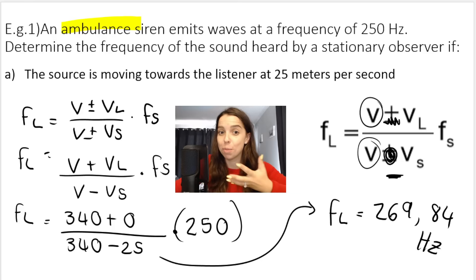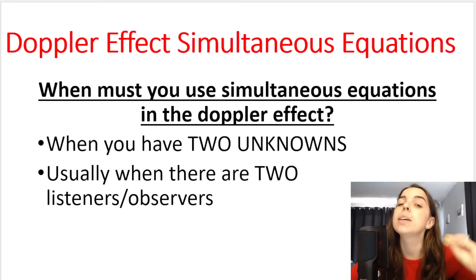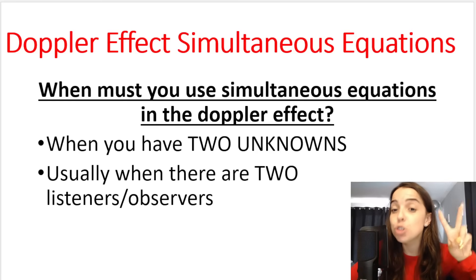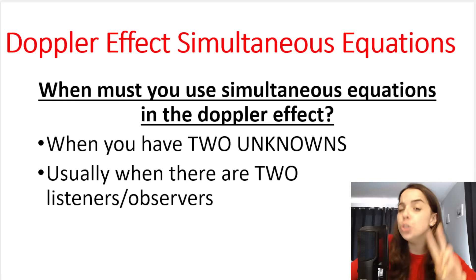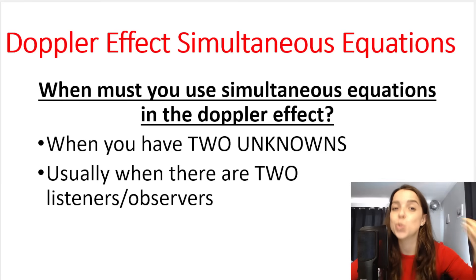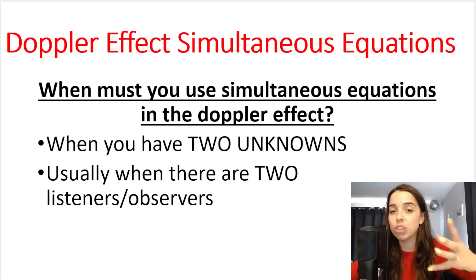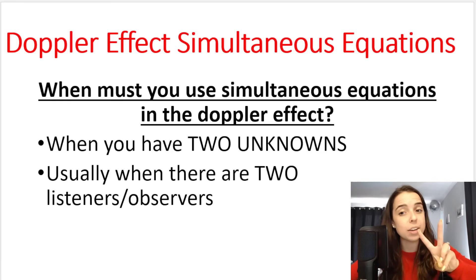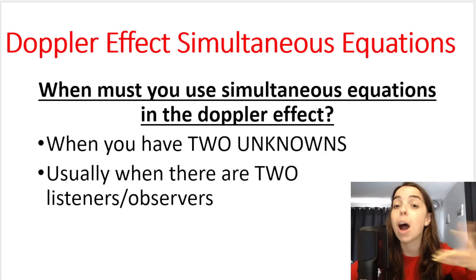Like in this example, you can see that FL was the only variable that I didn't know. However, there are certain instances in the Doppler effect section where you will have two unknowns. This is usually when there are two listeners or two observers listening to the same source. We need to set up two equations and then solve for our variables simultaneously.